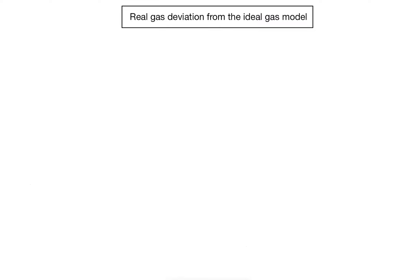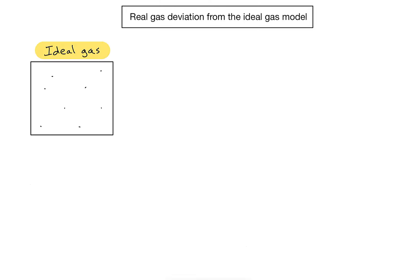This video is going to outline the conditions at which the behavior of a real gas deviates from what we would predict with the ideal gas model. First of all, let's remind ourselves of the ideal gas model. There is a box, a container containing an ideal gas, and there are two key assumptions that we make about ideal gases.